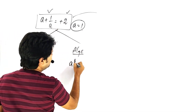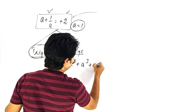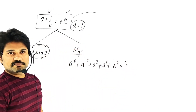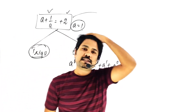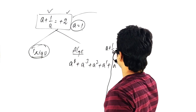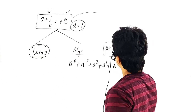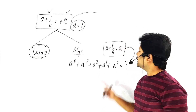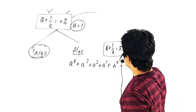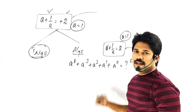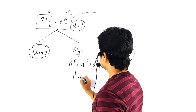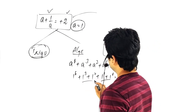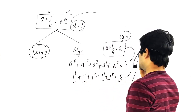Algebraical application: a to the power 6 plus a to the power 3 plus a squared plus a plus a to the power 0 equals some value. Given a plus 1 by a equals 2, we know a equals 1. Substitute a equals 1: 1 power 6 plus 1 cubed plus 1 squared plus 1 plus 1 power 0 equals 1 plus 1 plus 1 plus 1 plus 1 equals 5. The answer is 5.